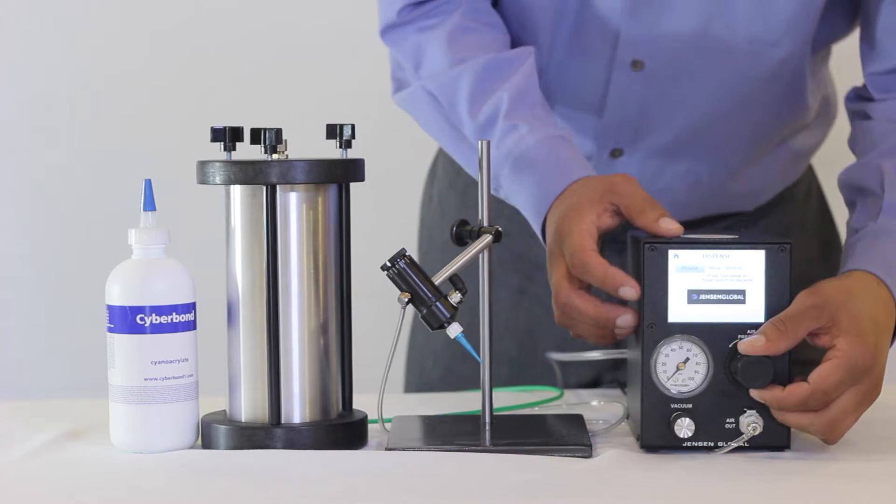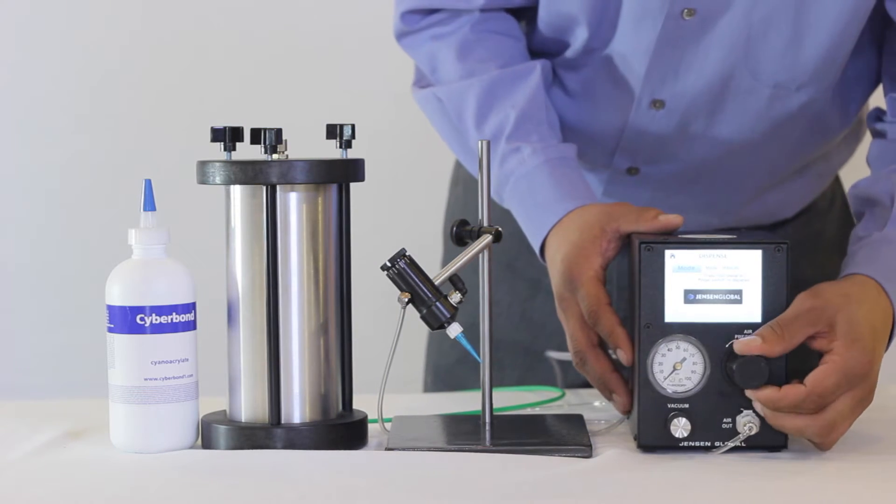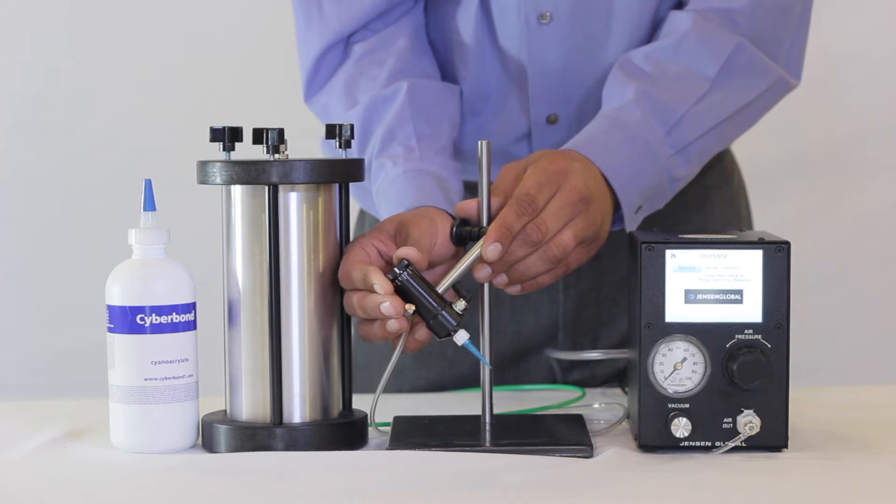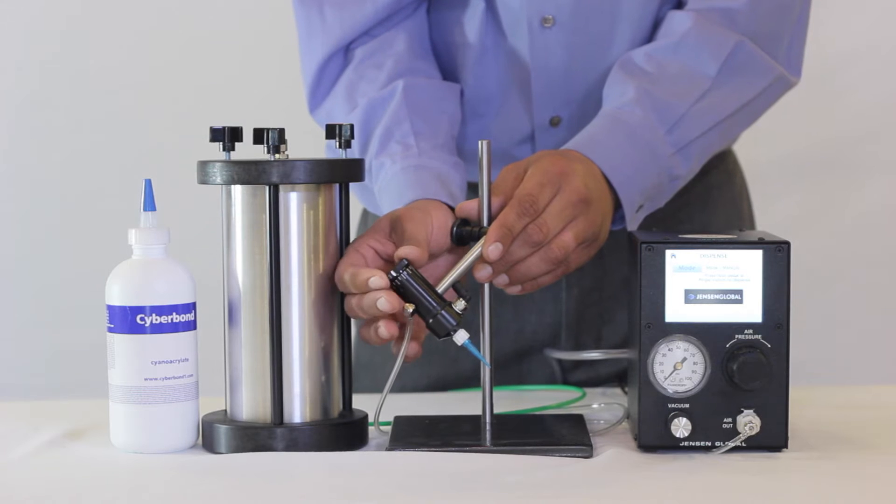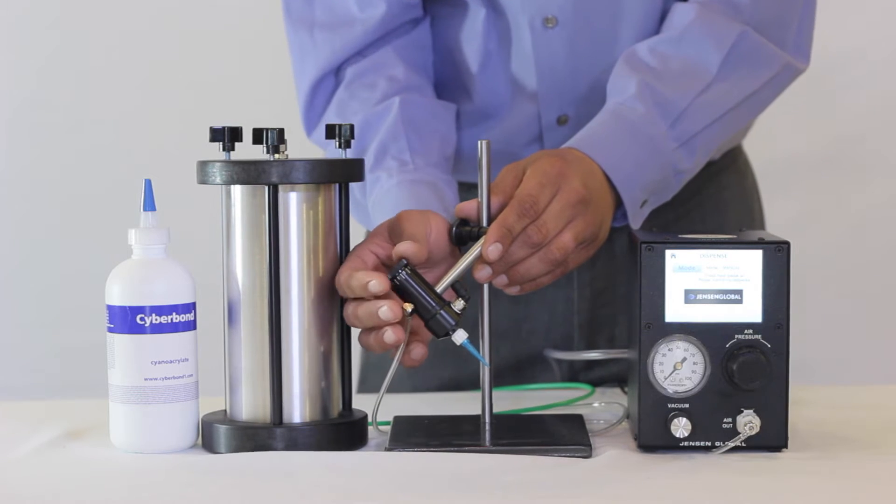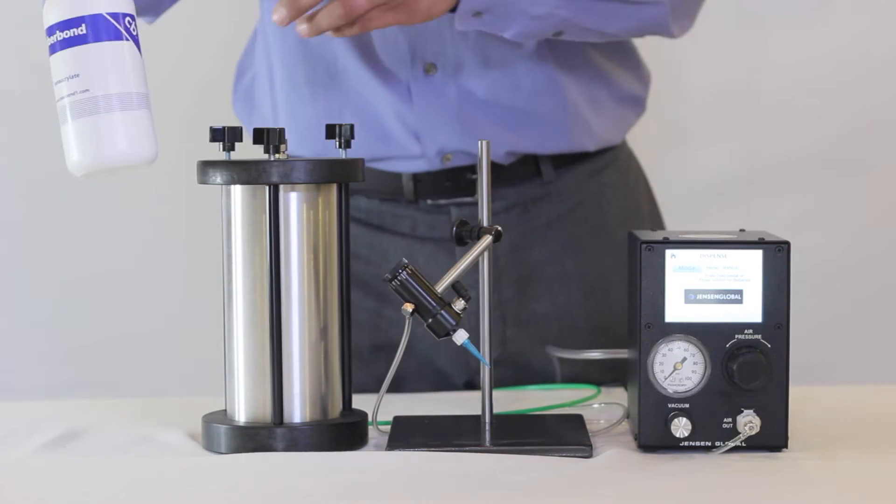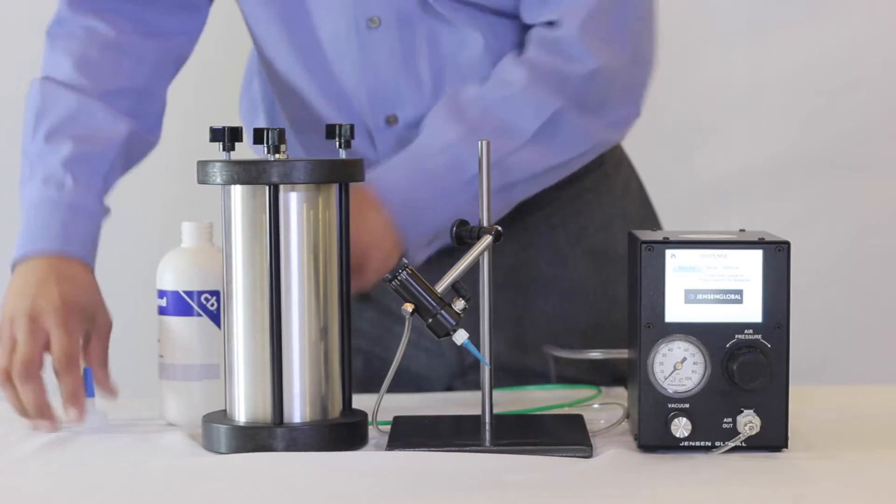The valve requires a minimum of 70 psi to actuate the material flow. The stroke adjustment knob allows you to increase or decrease the material flow rate. For thick materials like cyanoacrylate gels you may need to increase the stroke to get the proper flow. For thinner materials you want to decrease the stroke to reduce the flow.